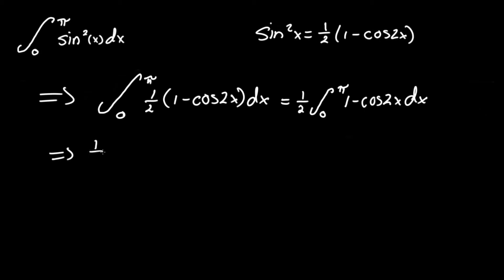This will equal one half times the integral of 1 with respect to x, which is just x, minus one over 2, which is essentially just one over whatever coefficient is within this trig function. So one over 2.